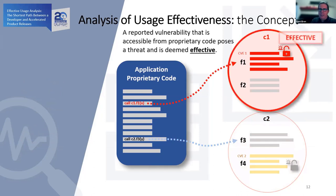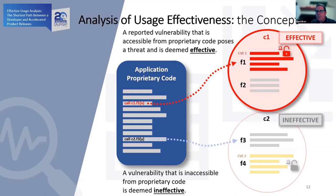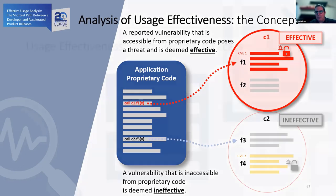The conclusion from the example: in the case of C1, it is deemed effective because the application's proprietary code accesses F1, which has a reported vulnerability. However, looking at the call made from the application for C2, the call does not go to the area considered a vulnerability — and therefore C2 is deemed ineffective.